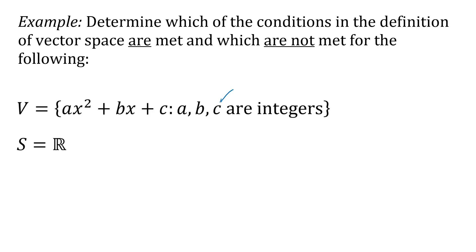a, b, and c being integers means they could be positive or negative whole numbers or zero. So we've got quadratic polynomials, but also degree one polynomials and constants would also be included — the important thing is that all of the coefficients are positive or negative whole numbers or zero.